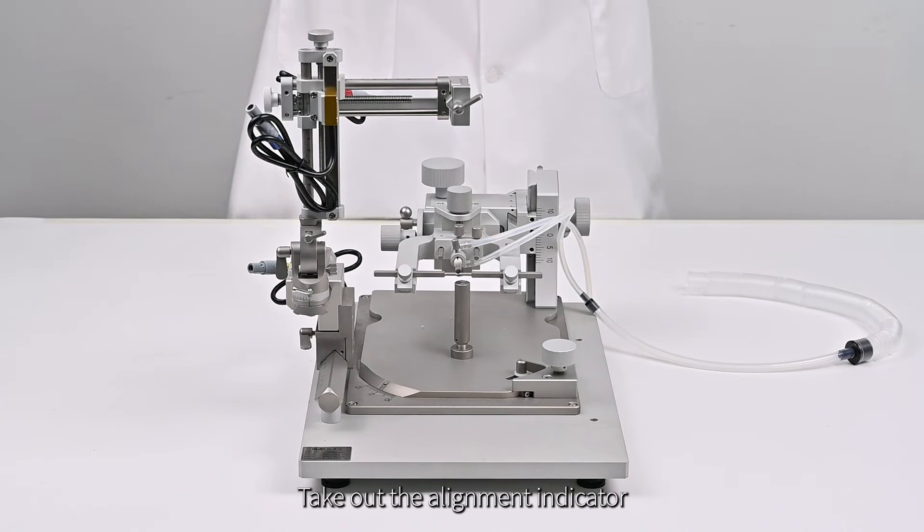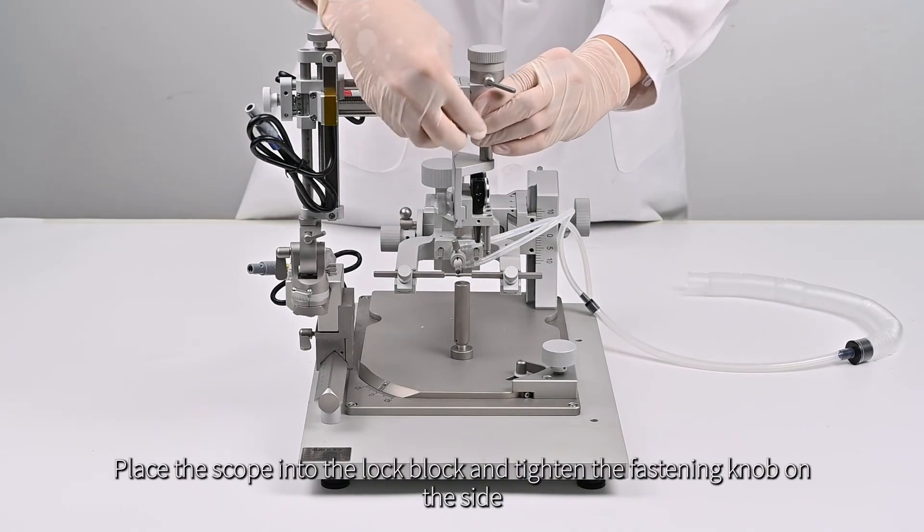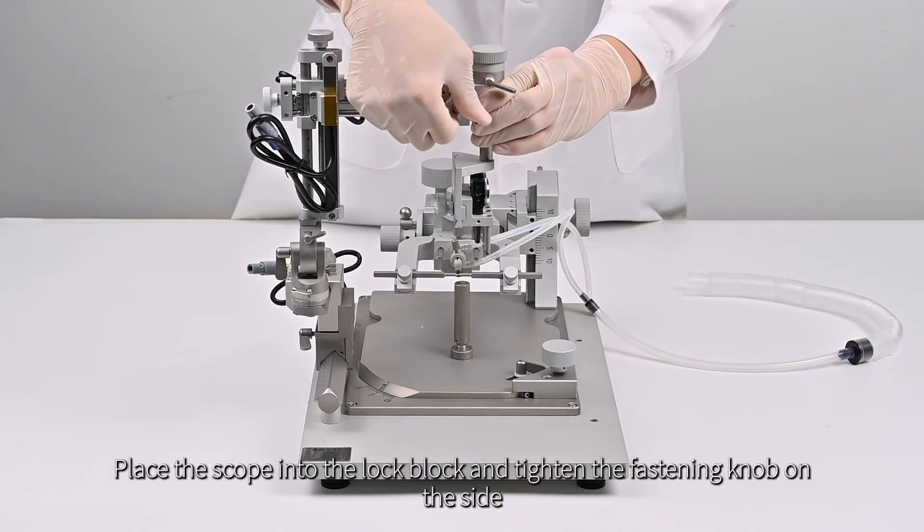Take out the alignment indicator. Place the scope into the lock block, and tighten the fastening knob on the side.